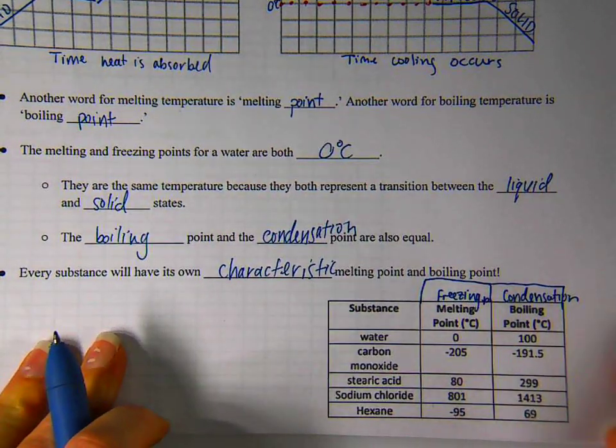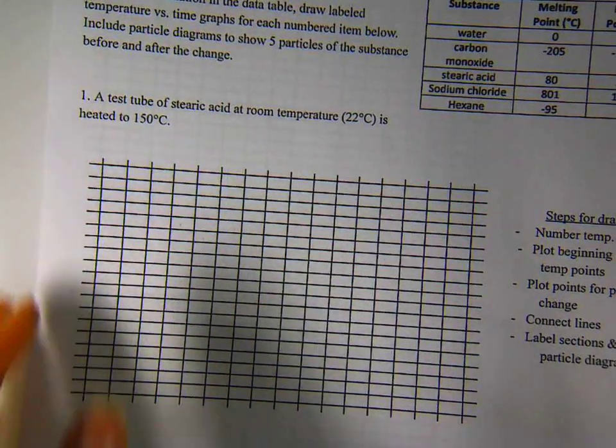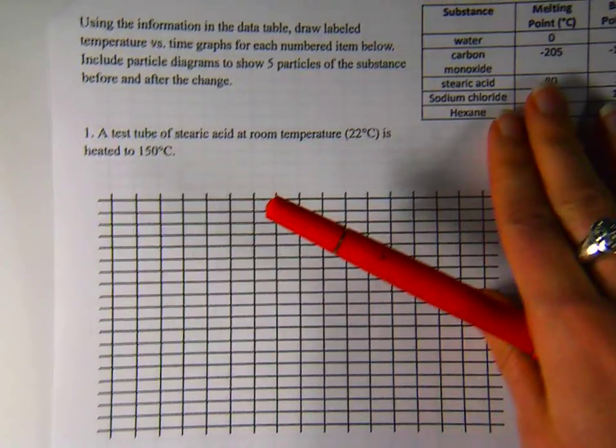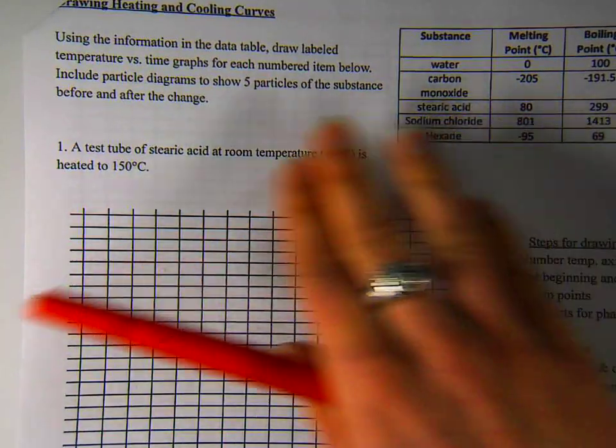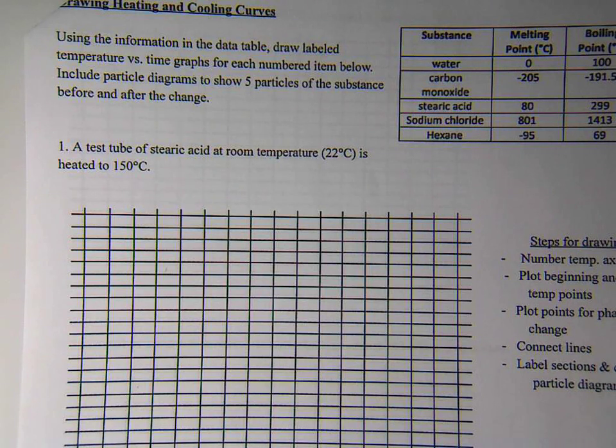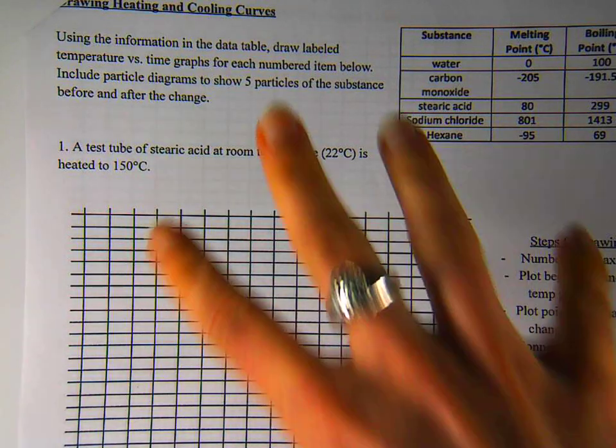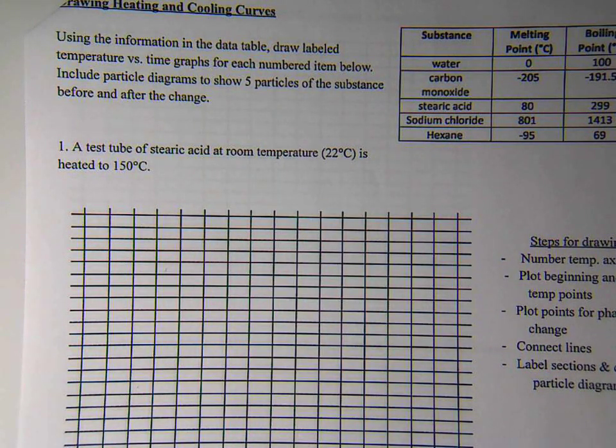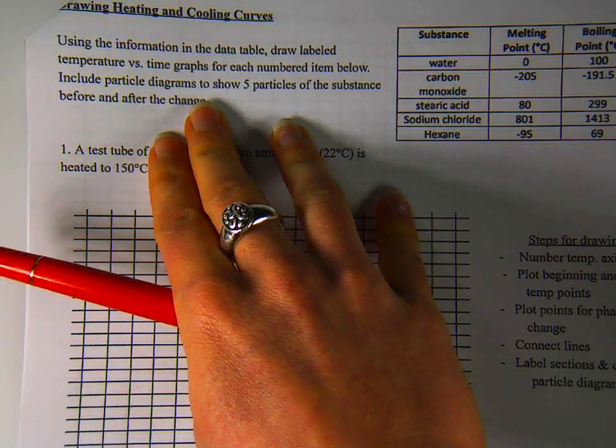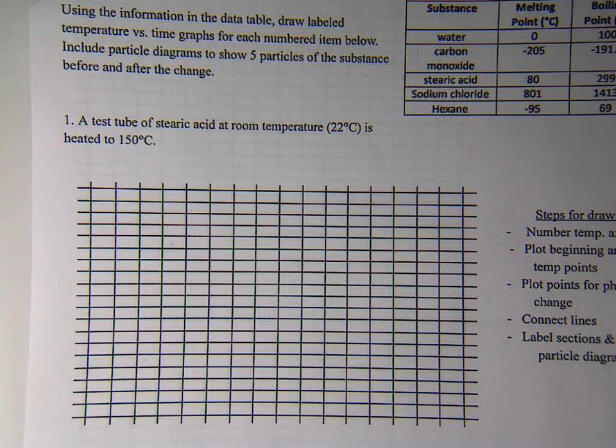This may help you as you go to do the next activity. So if we flip the page, we are going to practice drawing heating and cooling curves. So it says use the information in the data table. I've given you the aim one. Draw labeled temperature versus time graphs for each of the numbered items below. There's four of them. When you draw your curve, you should include particle diagrams to show five particles of substance before and after the change.